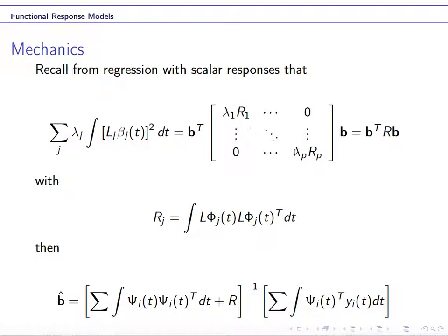And here this r1 to rp represent the penalty information on the basic function. So in other words, this is the definition of rj, the basic functions, rj, the roughness penalty matrix.